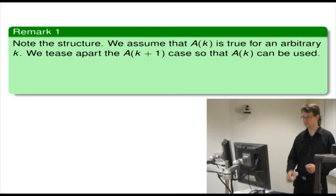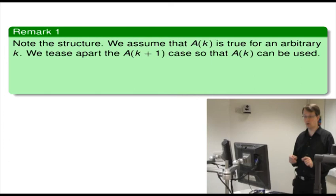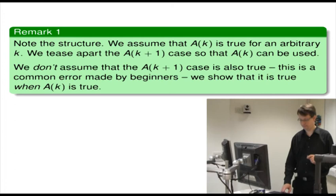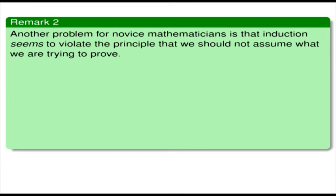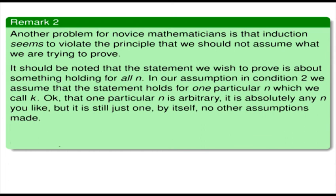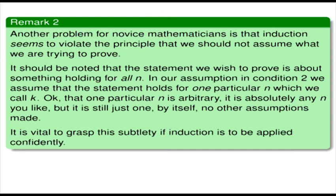Let's have a few remarks. Remark one: note the structure. We assume that A(k) is true for an arbitrary k. We tease apart the A(k+1) case so that A(k) can be used. We do not assume that the A(k+1) case is also true — this is a common error made by beginners. We show that it is true when A(k) is true. Remark two: another problem for novice mathematicians is that induction seems to violate the principle that we should not assume what we are trying to prove. The statement we wish to prove holds for all n, but in condition two we assume it holds for one particular n — which we call k. That one particular k is arbitrary, but it's still just one, with no other assumptions made. It is vital to grasp this subtlety if induction is to be applied confidently.